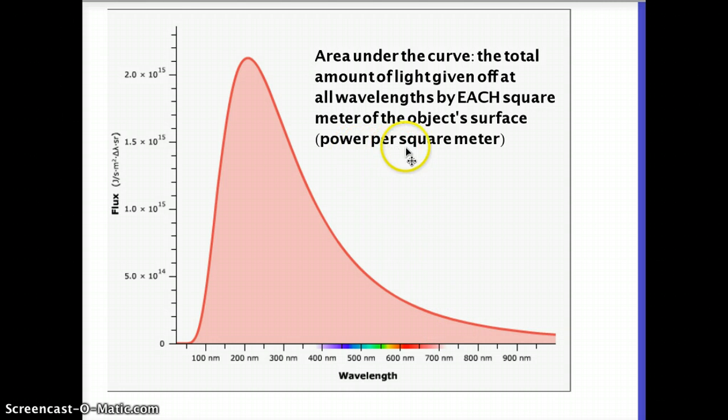This is called the power per square meter. You think of power as like the number of watts. Like if you have a hundred watt light bulb, that is its power. And if you were to divide that by the surface area of the light bulb, that would be its power per square meter. How much light or how much energy is being given off by each square meter every second.